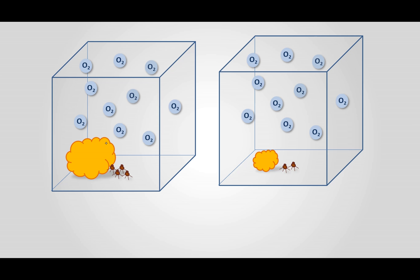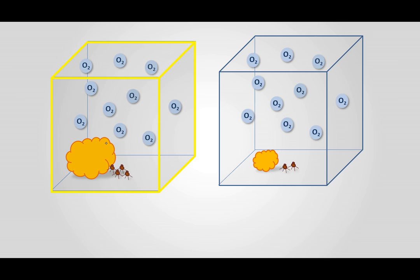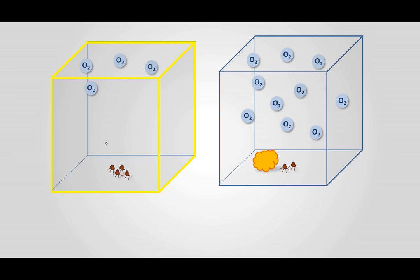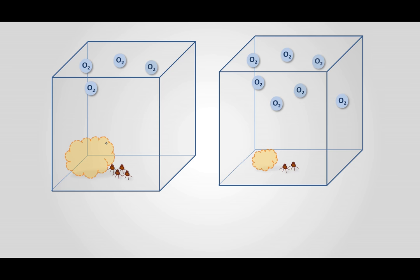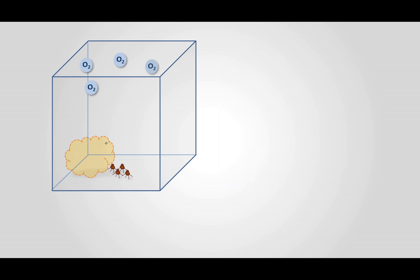Consider two boxes: the yellow box represents organic matter in a closed airtight chamber with O₂ bubbles representing dissolved oxygen. As soon as organic matter is present, microbes come and simultaneously consume the organic matter and the oxygen. In box 2, since the organic content is less compared to the previous box, the microbes will demand less oxygen for consumption of organic matter. So if the pollutant is more, the oxygen demanded is very high; if the pollutant is less, the oxygen demanded is also less.